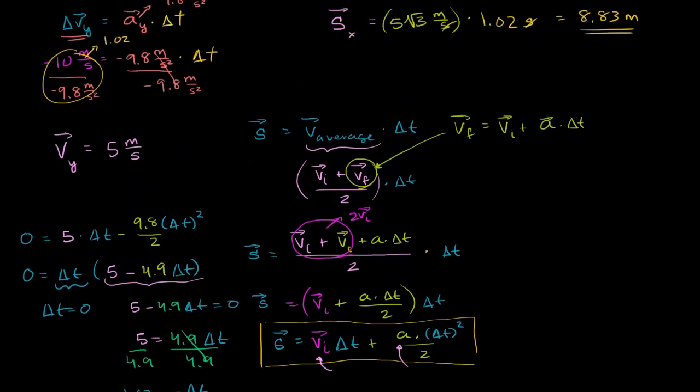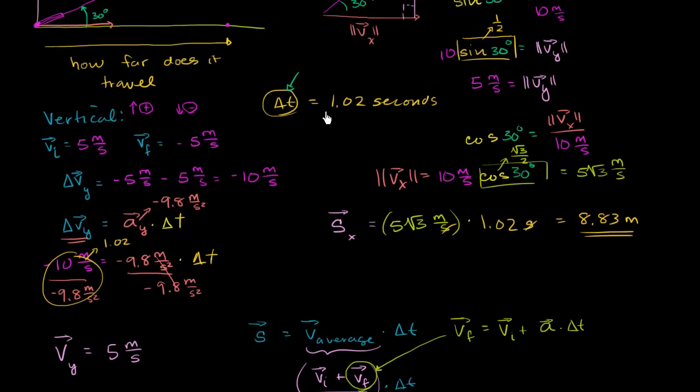And so we got the same exact answer as in the last video — we just used a different method. That's one of the really fun things about physics: as long as you're doing logically consistent, correct things, there are many ways to get the same answer. But it should be the same answer — if it's not, you probably did something wrong in one of the two approaches.